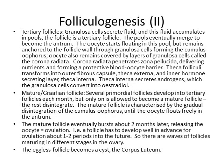As granulosa cells secrete fluid and pools accumulate in the follicle, we refer to it as a tertiary follicle. These pools eventually become one large pool called the antrum, and the oocyte floats in this pool anchored to the follicular wall by a thin cord of granulosa cells called the cumulus oophorus. The oocyte remains covered by a layer of granulosa cells called the corona radiata, which protects it from the maternal immune system and ensures nutrients can safely enter the oocyte.